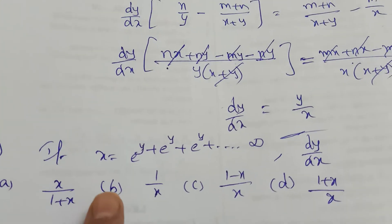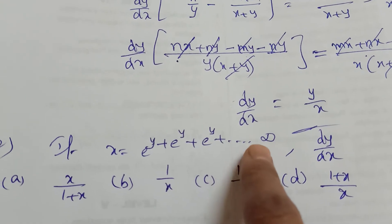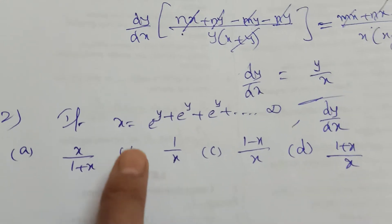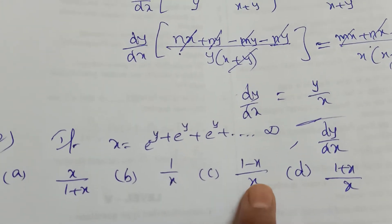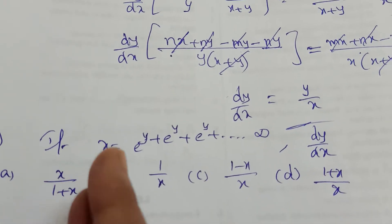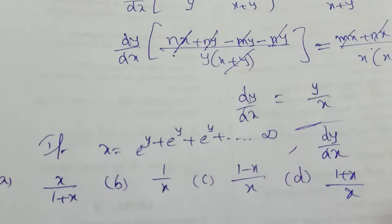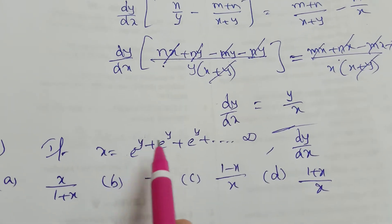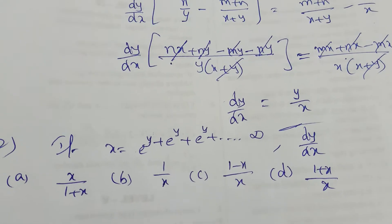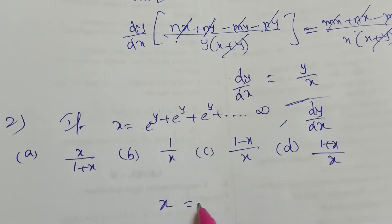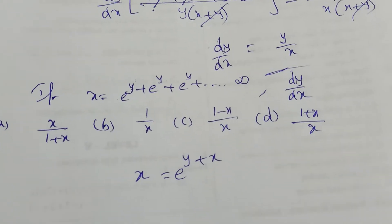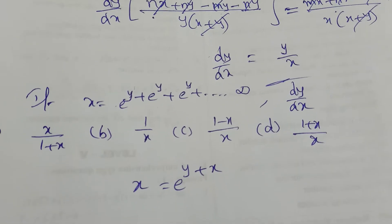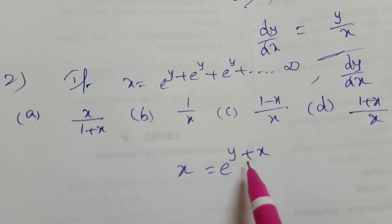Next problem: if x equal to e power y plus e power y plus e power y and so on up to infinity, find dy by dx. Options: x by 1 plus x, 1 by x, 1 minus x by x, 1 plus x by x. I will explain in just two steps — you will get the value easily. See here: e power y plus e power y and so on. That's why I am taking x equal to e power y plus x. Here powers are also a variable now.